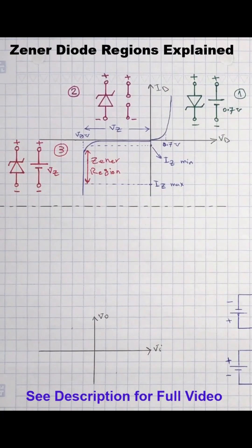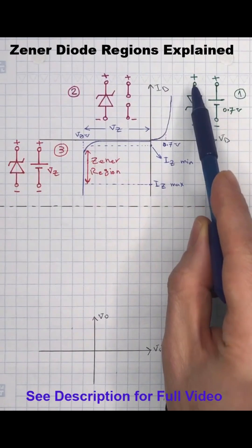Basically a Zener diode has three operational regions. We can start with forward bias region number one here in this graph. A forward bias condition is established by applying a positive potential to the anode and a negative potential to the cathode.